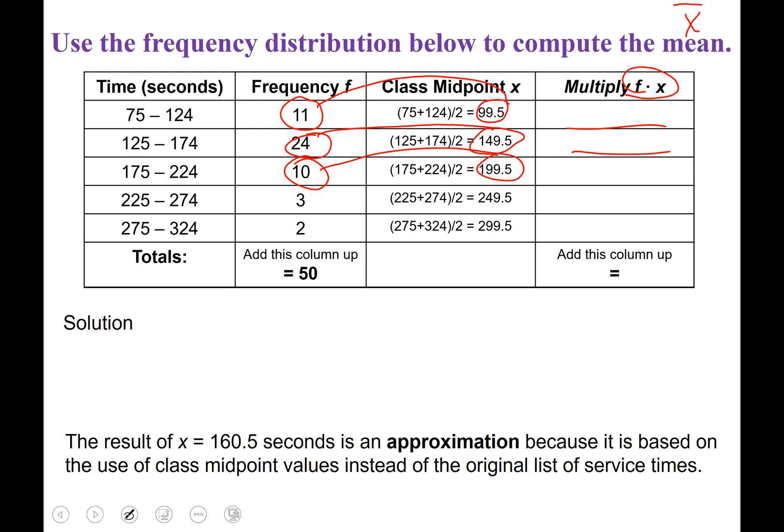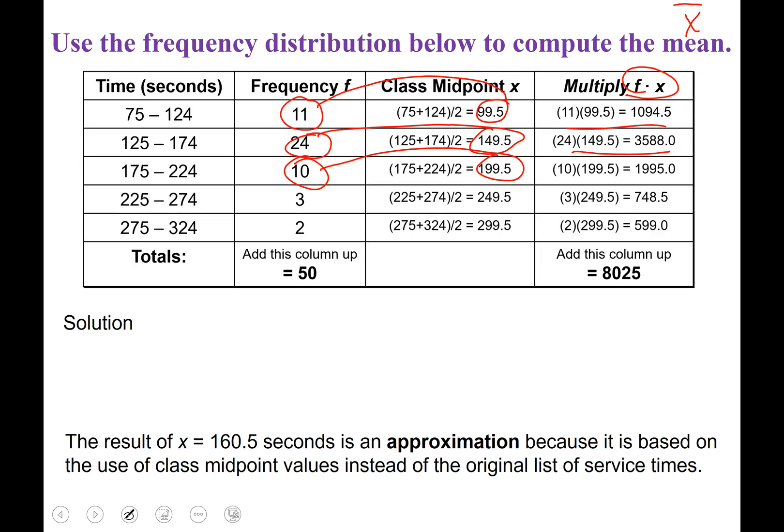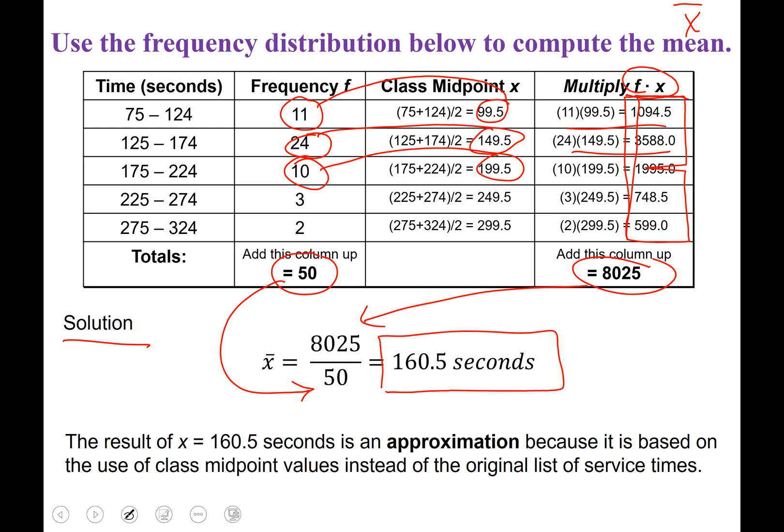Welcome back. If you did those correctly, you got 1094.5, 3588.0, 1995.0, 748.5, and 599.0. Okay, what we do now is we add all of these numbers up. And if you add them all up correctly, you will get about 8,025. Okay, so a lot of work done so far. Now let's talk about our solution. We find our solution by taking our 8,025 and dividing that by our total number of data values, which was 50. And that gives us x-bar being 160.5 seconds.